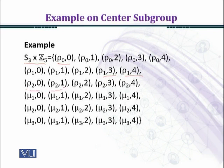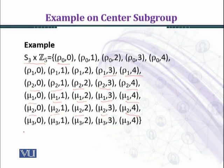In the same manner, fixing the first coordinate as ρ2 gives: (ρ2, 0̄), (ρ2, 1̄), (ρ2, 2̄), (ρ2, 3̄), (ρ2, 4̄). Similarly for μ1: (μ1, 0̄), (μ1, 1̄), (μ1, 2̄), (μ1, 3̄), (μ1, 4̄); for μ2: (μ2, 0̄), (μ2, 1̄), (μ2, 2̄), (μ2, 3̄), (μ2, 4̄); and for μ3: (μ3, 0̄), (μ3, 1̄), (μ3, 2̄), (μ3, 3̄), (μ3, 4̄).